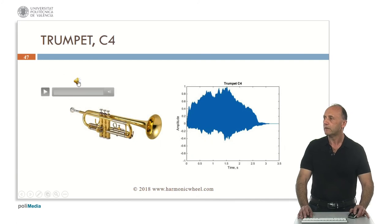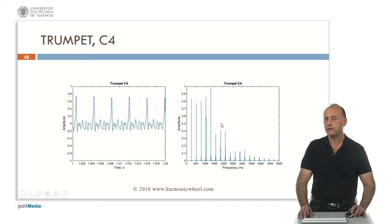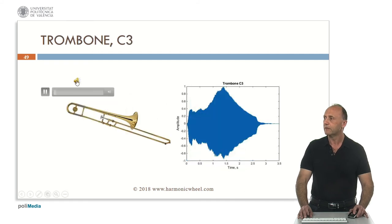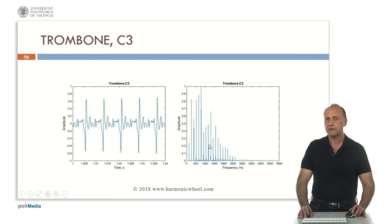Trumpet, C4. Envelope, waveform and the spectrum, with many harmonics too. Trombone, C3. Envelope, waveform and the spectrum. It has many harmonics as well.